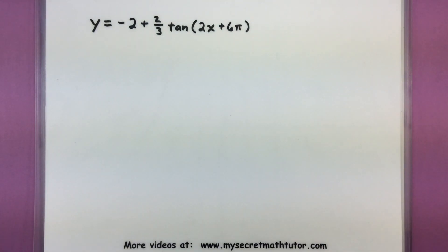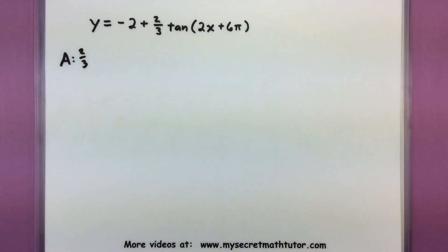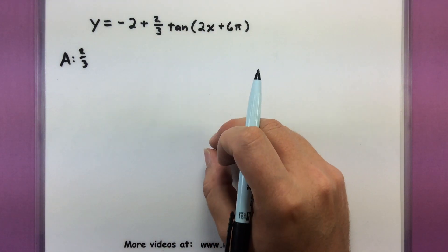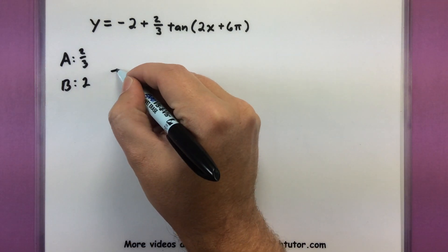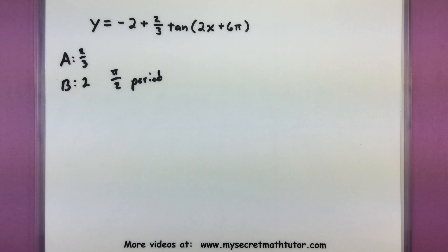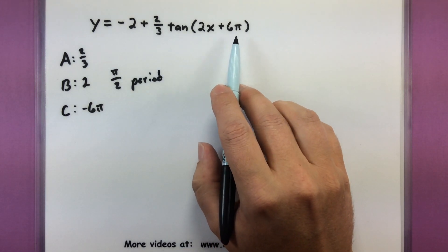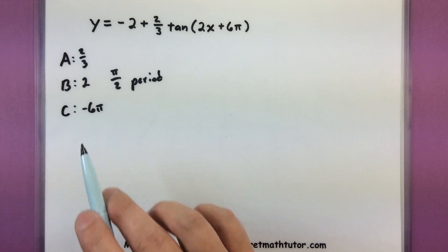On to a difficult example. We have lots of different transformations here, so let's spend some time figuring out what all these numbers are doing and then carefully plot them on a graph. Starting with a: we get a value of 2 thirds, which is the number being multiplied right in front of tangent. It's positive, so we're not flipping it, but it will affect where our key values are — essentially up 2 thirds or down 2 thirds. Moving on to b: b is the number in front of x, simply a 2, and it helps us figure out our period by taking pi divided by 2. Now c: I'm going to say c is negative 6 pi, because normally we think of x minus the value of c. Since it's positive, I'm thinking x minus a minus 6 pi, and that's why I'm getting that value.